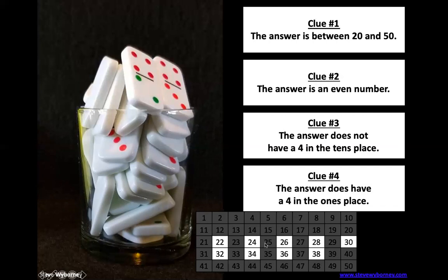The answer does have a four in the ones place, so we should go ahead and cross out anything that does not have a four in the ones place. That brings us down to just two numbers: 24 or 34.